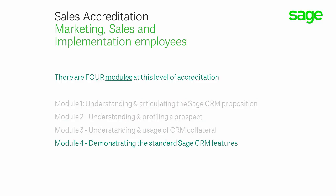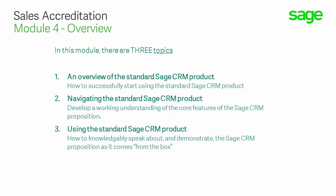This is the fourth module — module number 4 of the Accreditation at Level 1 — designed for people in marketing, sales and implementation roles. For this module, these are the topics we will be covering. Each topic is made up of a video of approximately 20 minutes in duration. Each topic contains information to build competence and confidence for people within marketing, sales and implementation roles.